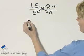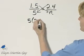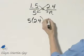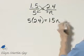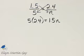Here we have the cross product 5 times 2 and 4 tenths equal to, here we have 1 and 5 tenths times n, which is simply 1 and 5 tenths n.